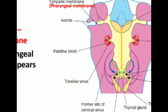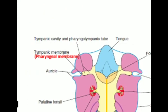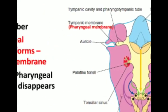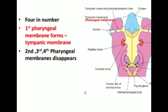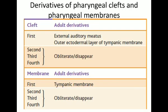Here you can see the pharyngeal membrane. In summary, the first ectodermal cleft will form the external auditory meatus and outer layer of the tympanic membrane, and the first pharyngeal membrane will form the tympanic membrane. The second, third and fourth clefts and membranes will all disappear.